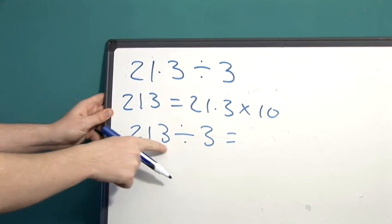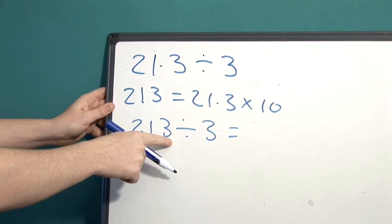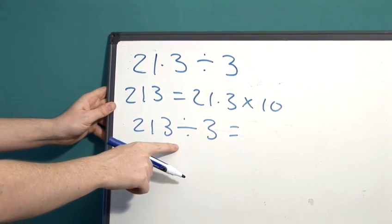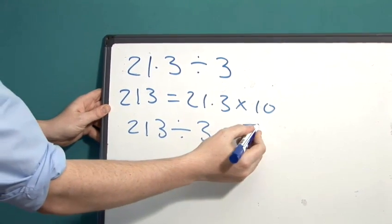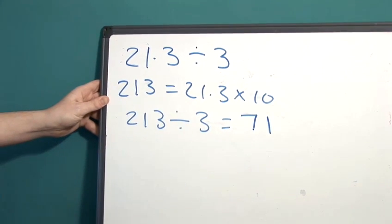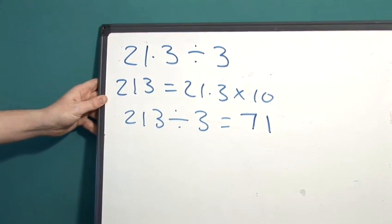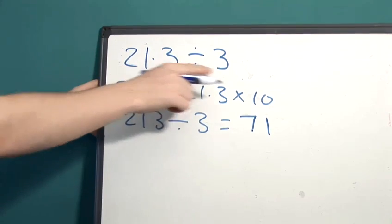Now, we just need to realize that 213 is in fact 71 multiplied by 3 to find out that this is 71. We could use a calculator to do this.